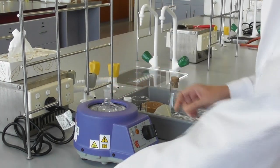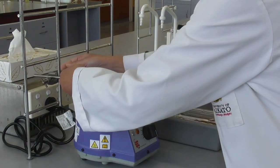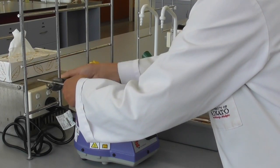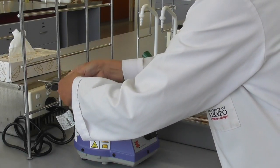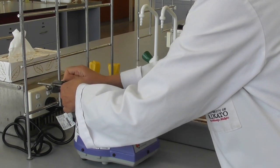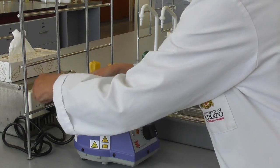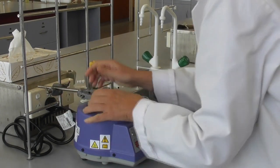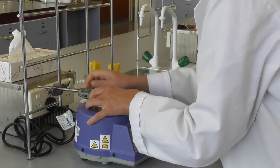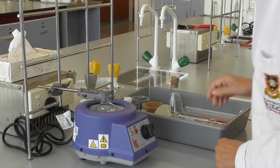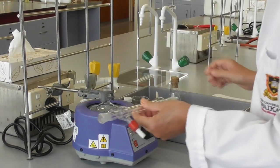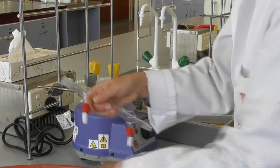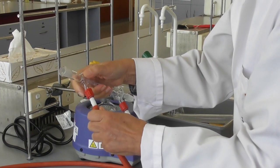We start this experiment by setting up the reflux apparatus. First, we clamp a 100ml round bottom flask to sit securely inside a heating mantle. It has to sit snug and be in touch with the surface of the heating mantle so the heat can be transferred into the flask.